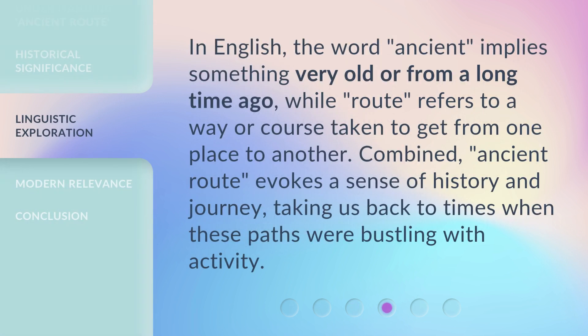In English, the word Ancient implies something very old or from a long time ago, while Root refers to a way or course taken to get from one place to another. Combined, Ancient Root evokes a sense of history and journey, taking us back to times when these paths were bustling with activity.